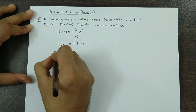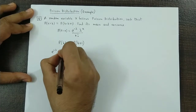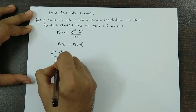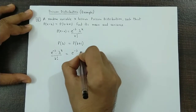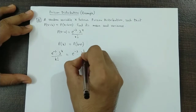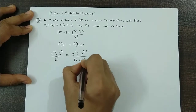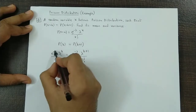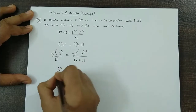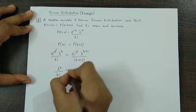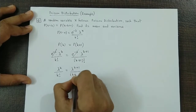So we obtain e raised to minus lambda into lambda raised to x. Here the value of x is k, divided by k factorial. On the right hand side we have e raised to minus lambda, lambda raised to k plus 1, divided by k plus 1 factorial. On both sides we cancel out e raised to minus lambda. So we have lambda raised to k upon k factorial is equal to lambda raised to k plus 1 upon k plus 1 factorial.